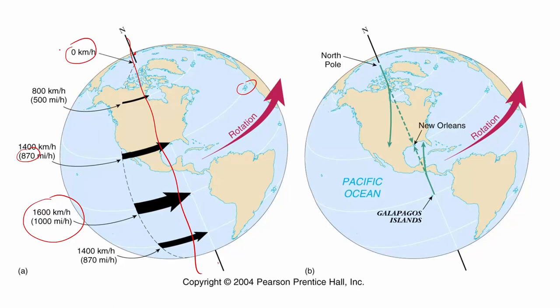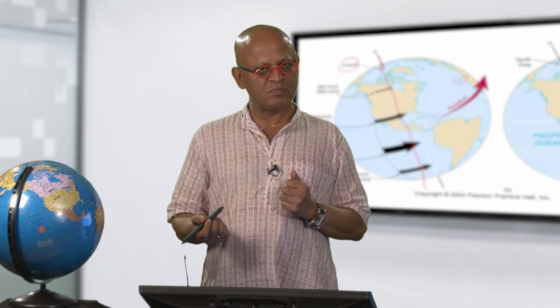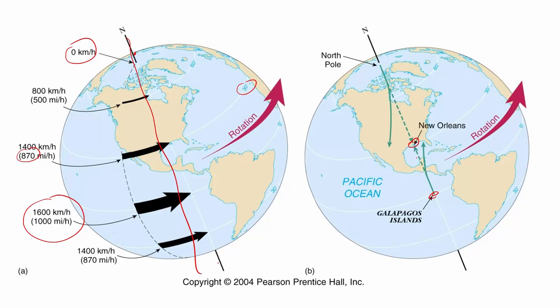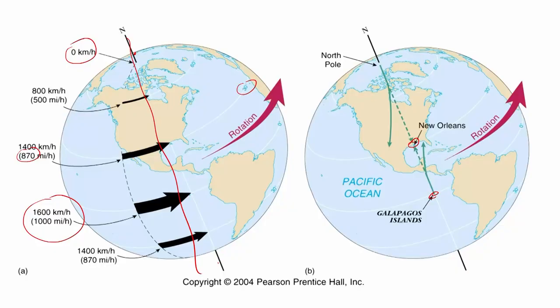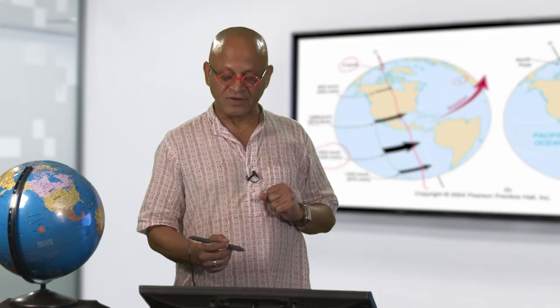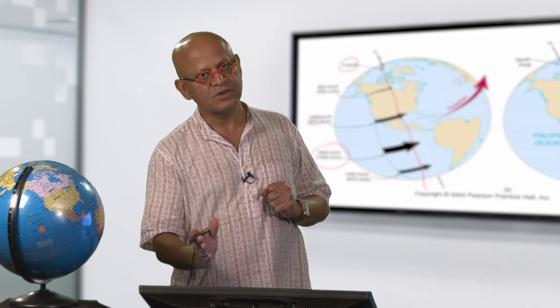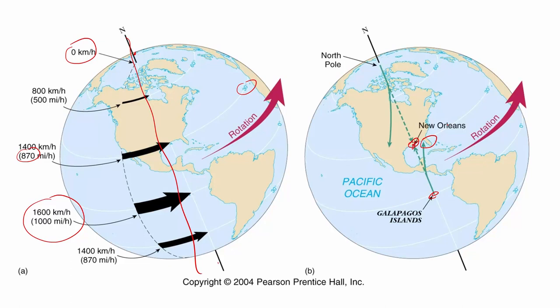Think of it this way: let us say we are trying to launch a rocket from the Galapagos Islands in the eastern Pacific towards New Orleans, which got hit by Hurricane Katrina in 2005. The rocket is moving north, but since it is launched from the equator it is also moving eastward at 1600 kilometers per hour. As it goes north, the surface under the rocket is moving slower and slower, so the rocket actually moves east of New Orleans — because New Orleans is only moving at 870 miles per hour while the rocket has been moving eastward at 1000 miles per hour. Essentially, the Coriolis effect has moved the rocket to the right of its northward direction of motion.